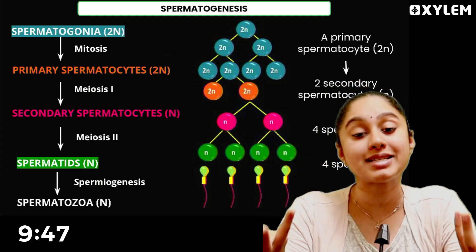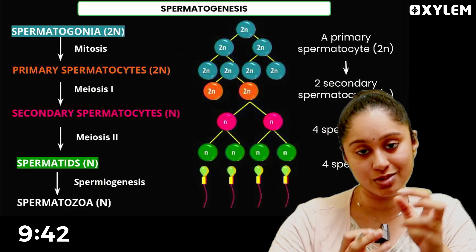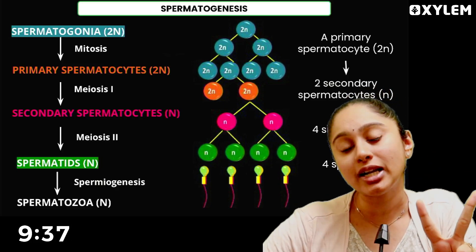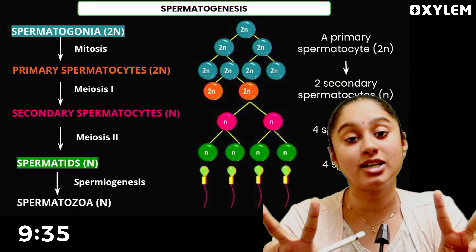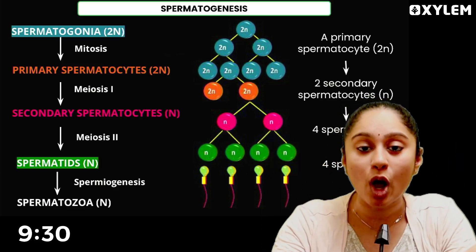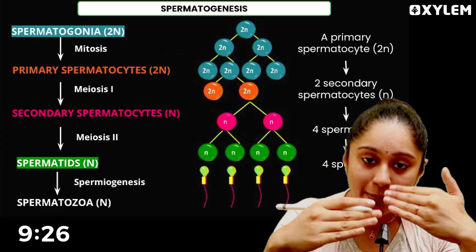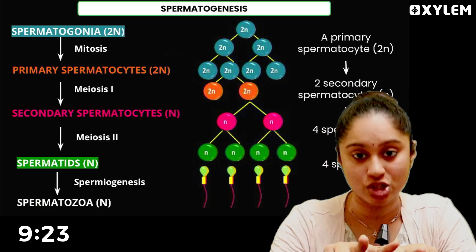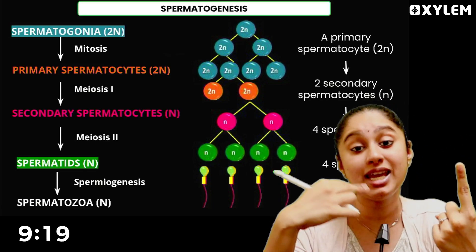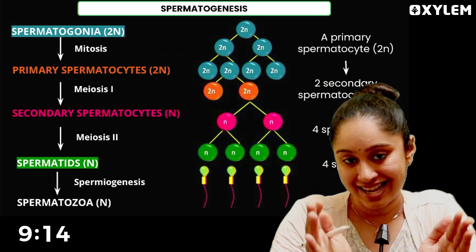Fundamentally, we all know that body cells are in the diploid condition — 2N condition. So if sperm is 2N and egg is 2N, their fusion would give 4N, which is not the proper ploidy for human beings. So the gametes must form in the N condition — gamete is N, gamete is N — and together they form a 2N zygote.